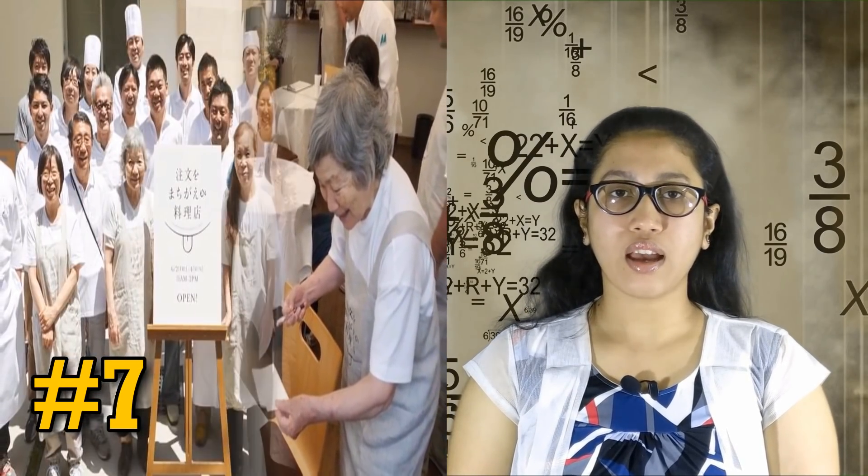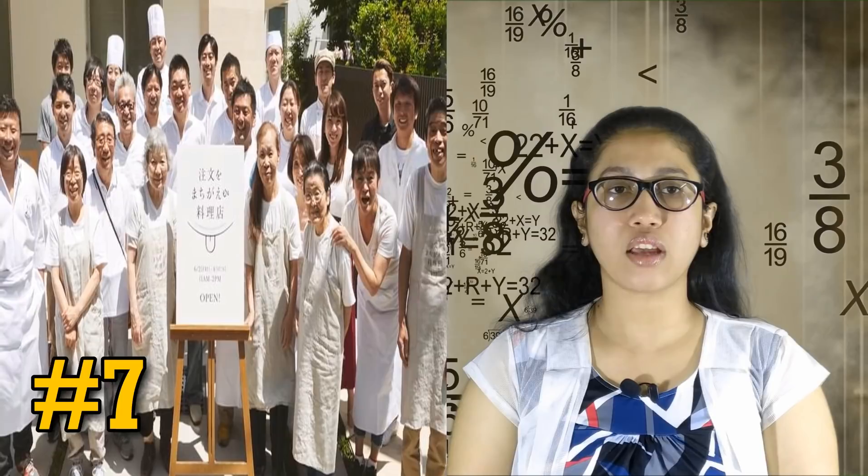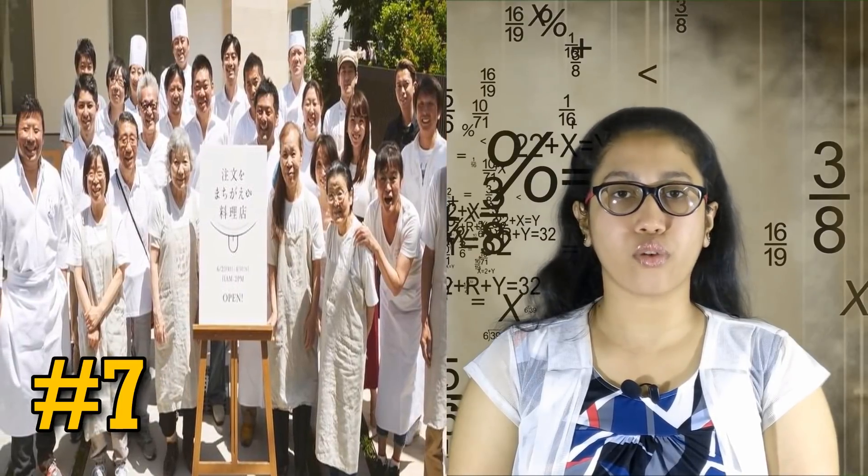In Tokyo, the restaurant of order mistakes opened for a trial period last summer. It hired people with dementia as waiters and told customers they might get orders wrong. Customers seemed to enjoy never knowing what they were going to get.